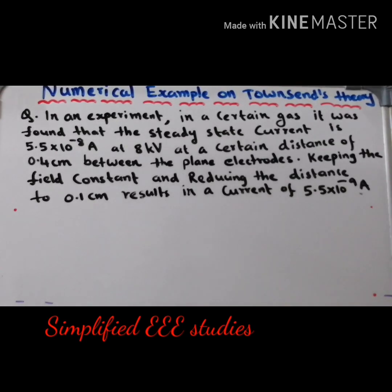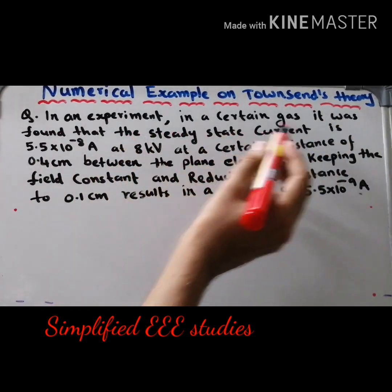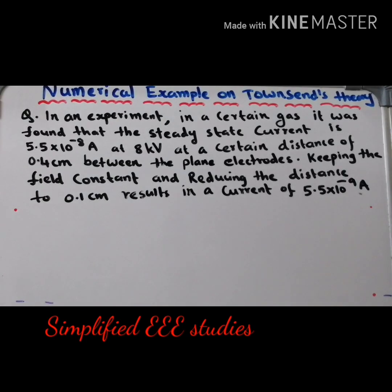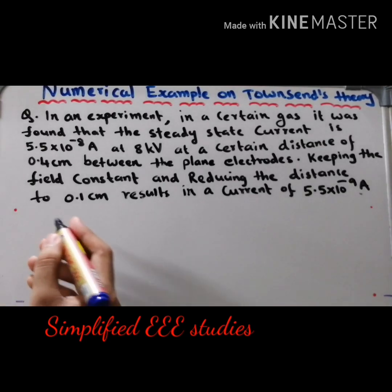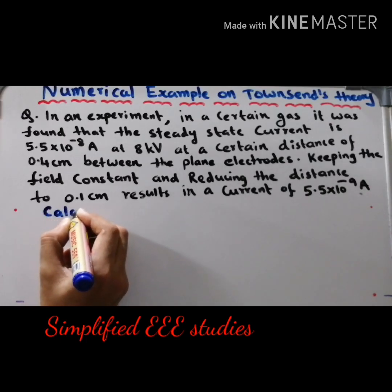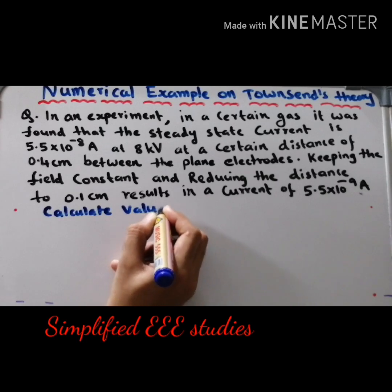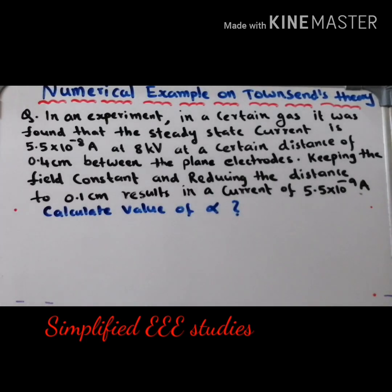Moving on to the first question. In an experiment in a certain gas, it was found that the steady state current is 5.5 × 10⁻⁸ ampere at 8 kilovolt, at a certain distance of 0.4 centimeter between the plane electrodes. Keeping the field constant and reducing the distance to 0.1 centimeter results in a current of 5.5 × 10⁻⁹ ampere. You are supposed to calculate Townsend's primary ionization coefficient, alpha.